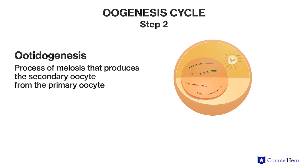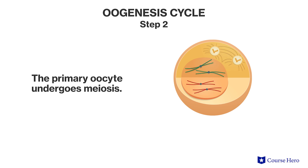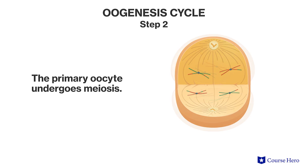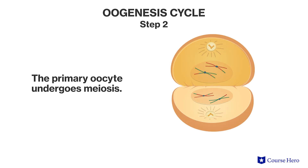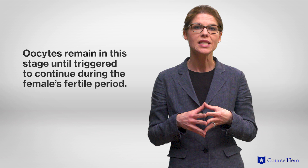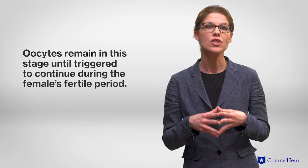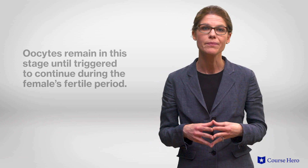Step two: ootidogenesis is the part of meiosis that produces the secondary oocyte from the primary oocyte. In this step, the primary oocyte undergoes meiosis, splitting its genetic material between two daughter cells. However, this process is halted in prophase I. The oocytes remain in this stage until triggered to continue during the female's fertile period. During each fertile cycle, only some cells move forward in the process and are available for fertilization.